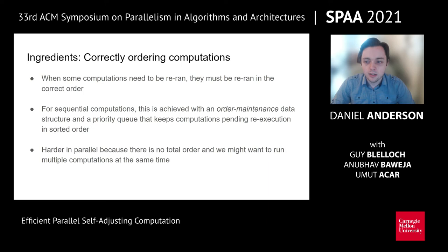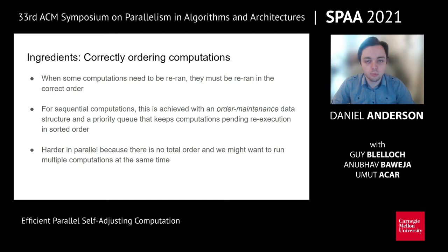Another challenge is correctly ordering computations, because when we re-run computations they must be re-run in the correct order to get the correct result. In the sequential world this is achieved with an order maintenance data structure and a priority queue keeping pending computations sorted by order. However, this is more challenging in parallel, because there is no longer a total order on computations, and we want to be able to re-run multiple computations in parallel if that is allowed.